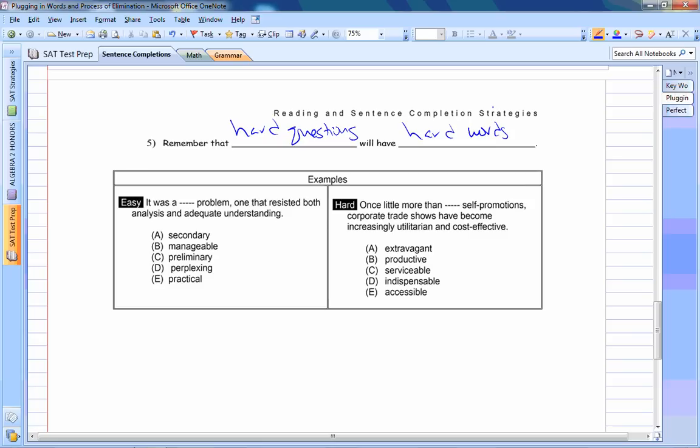So here we have an easy and a hard one. It was a blank problem, one that resisted both analysis and adequate understanding. So you see a comma, so you see a cause and effect, there's no negative flow words. It's resisting, means it's hurting your ability to analyze it and adequately understand it. So you want to say it was a hard problem. Secondary doesn't mean hard, manageable doesn't mean hard, preliminary doesn't mean hard, perplexing does, we'll come back to practice doesn't mean hard. So we knew all the words, we knew four didn't fit, one did, so the answer is D.